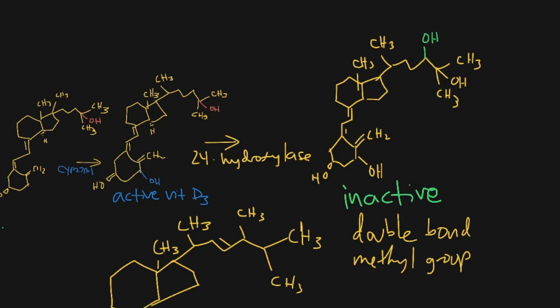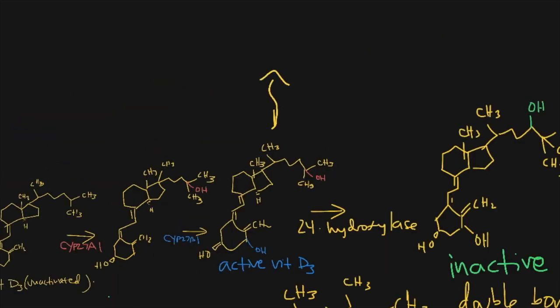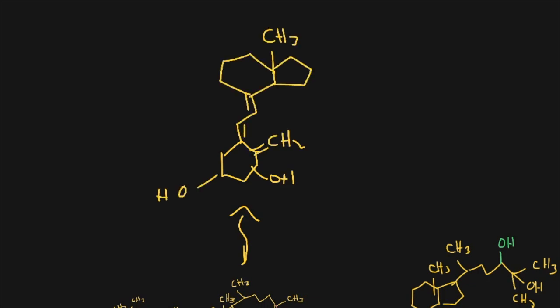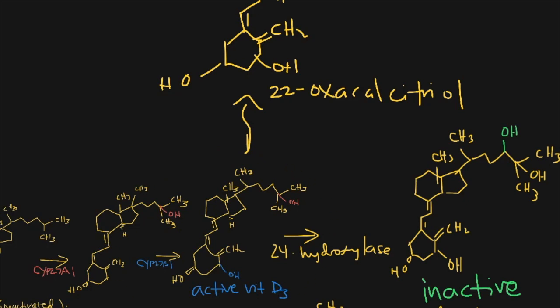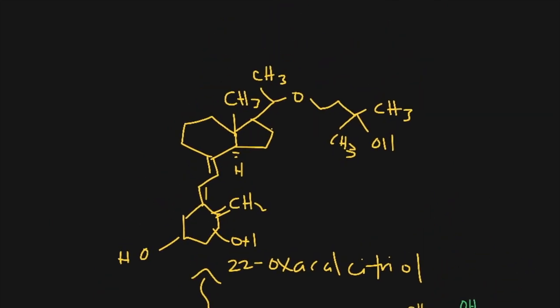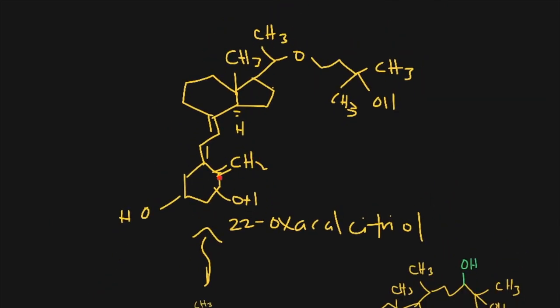For the analogs, I don't memorize each one — I memorize the major concepts: if I see a 24-hydroxy it's inactive; if I see hydroxy at position 1 or 25, it's active. The first vitamin D3 analog is 22-oxacalcitriol. Is this molecule active? It's active because it has a 1-hydroxy and a 25-hydroxy, and there's no 24-hydroxy. So having a 25-hydroxy at the top, a 1-hydroxy at the bottom, and no 24-hydroxy means it is active.